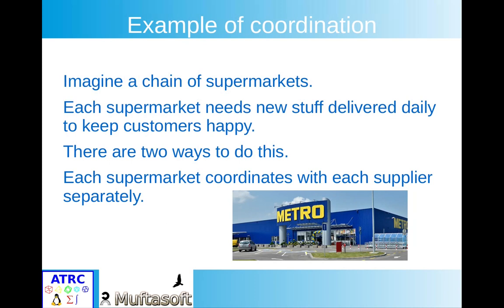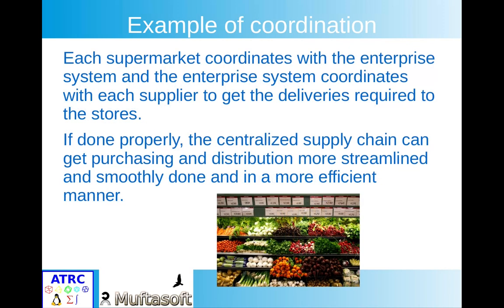For example, to explain this point, let's imagine a chain of supermarkets. Each supermarket needs to have its shelves stocked with the stuff that their customers want to keep them happy. There are two ways to do it: one is each supermarket coordinates with each supplier separately, or you can have a centralized system where each supermarket coordinates with the enterprise system and the enterprise system coordinates with each supplier to get the deliveries required.